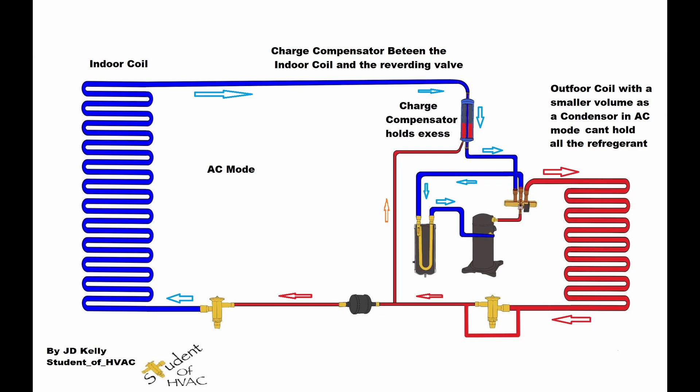In AC mode, we can see that the volume of the condensing coil is much smaller. This is typical with some micro channel systems, especially for this particular manufacturer. Again, that charge compensator is between the indoor coil and reversing valve on that gas line. But in this case, that gas line is low temperature, low pressure circuitous vapor.